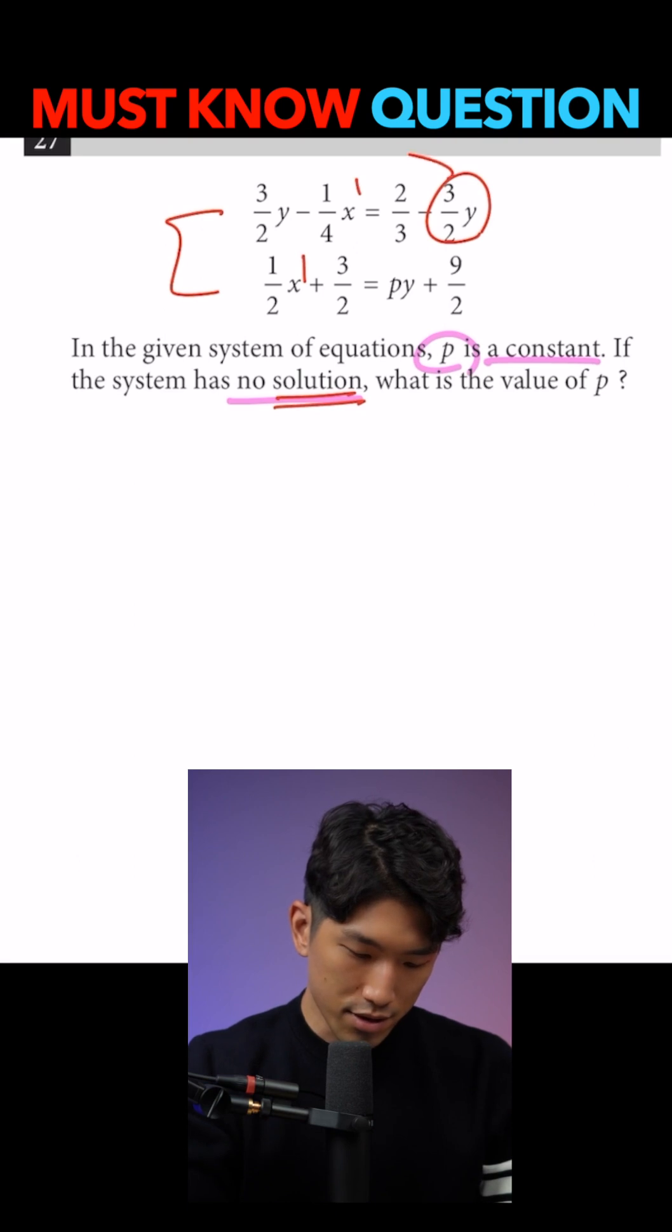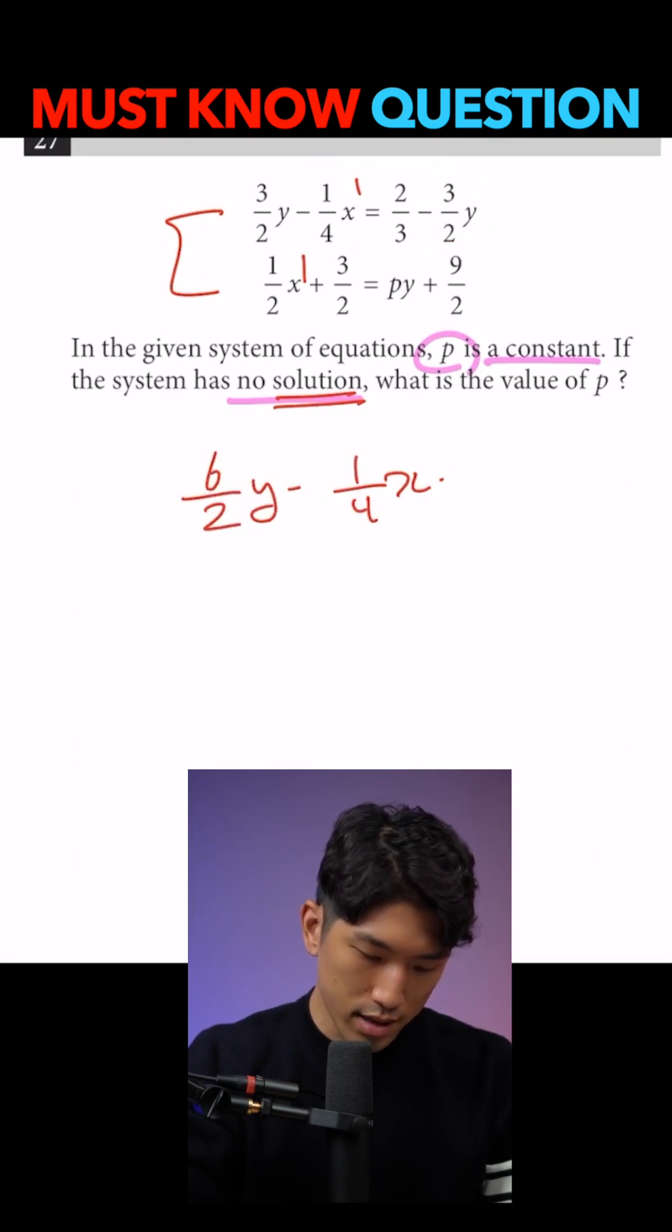So here's how it works. If I move this to the other side, I'm going to get 6 over 2Y minus 1 over 4X is equal to 2 over 3. And for this one, I'm going to move Y to the other side minus PY plus 1 half X is equal to 6 over 2.